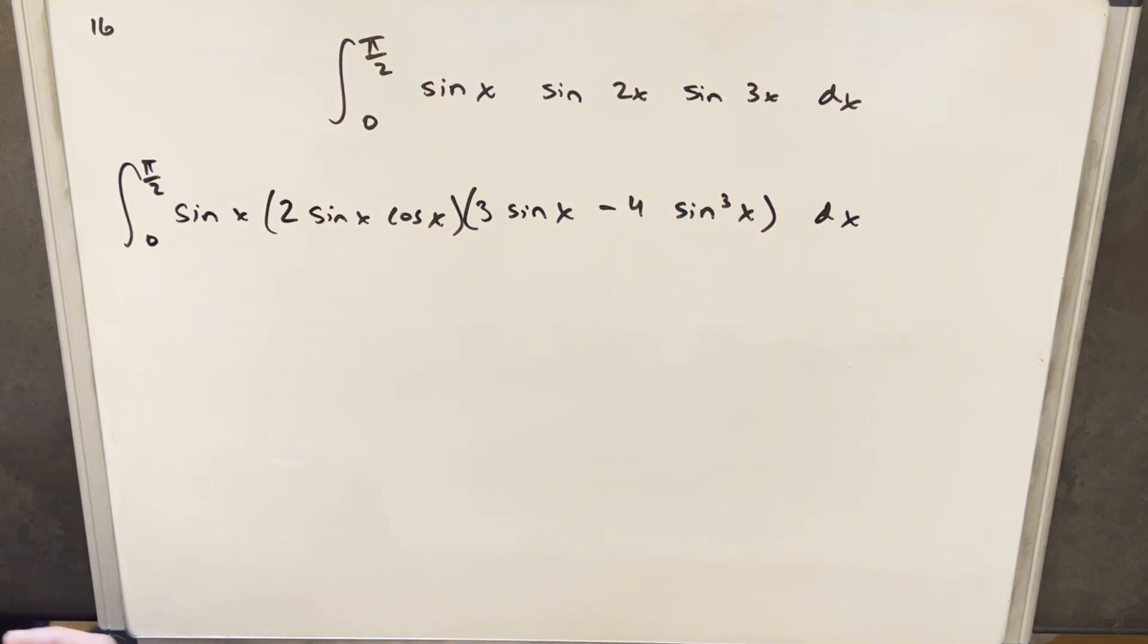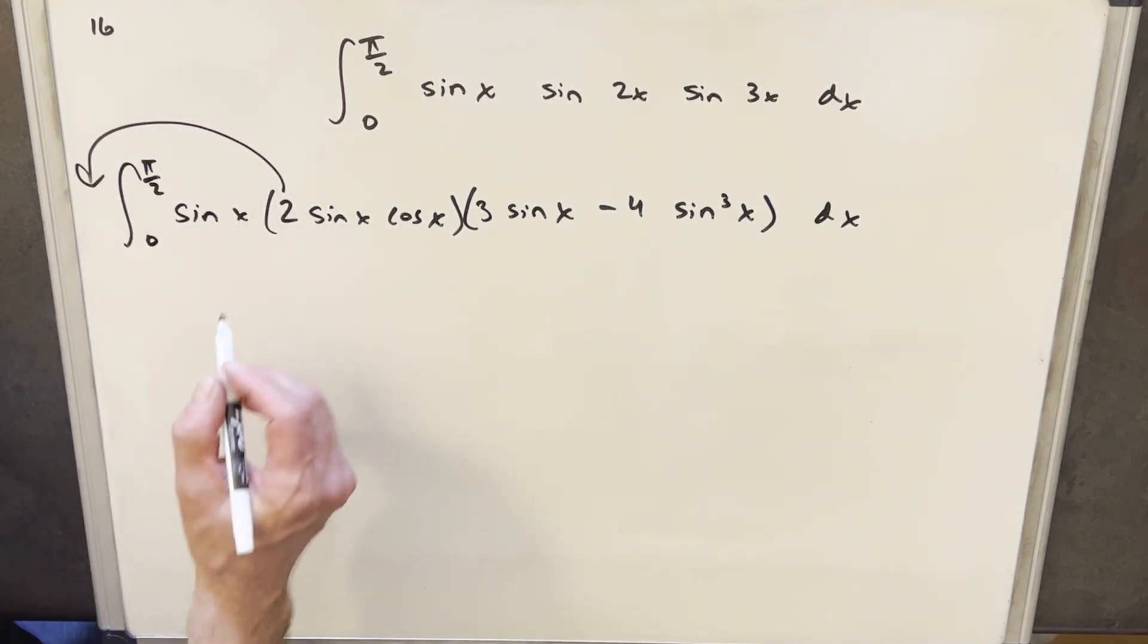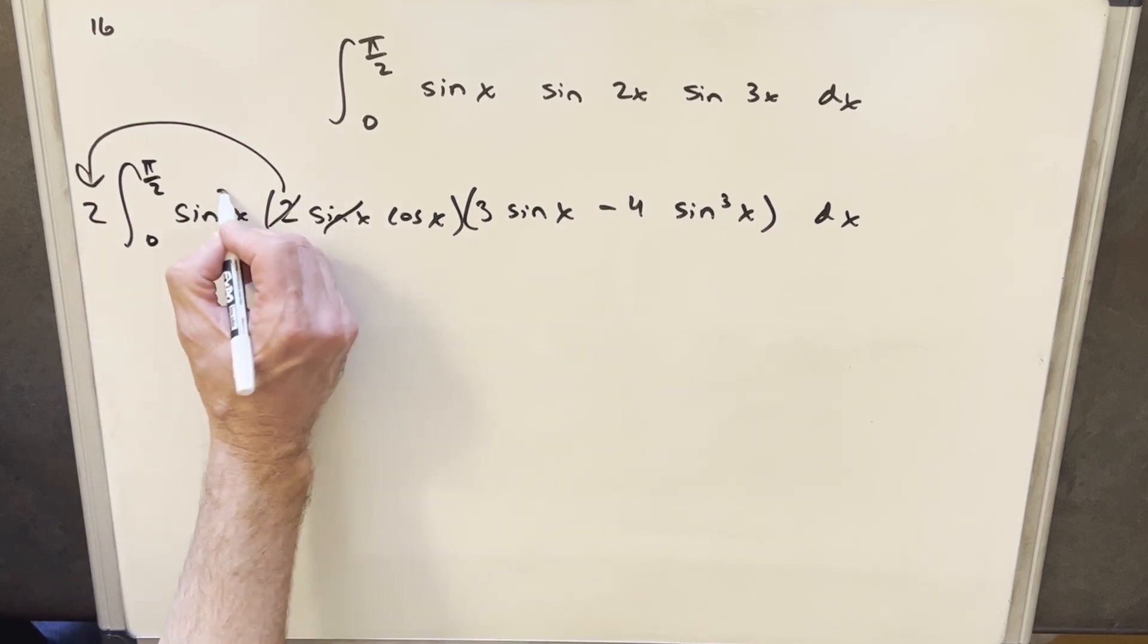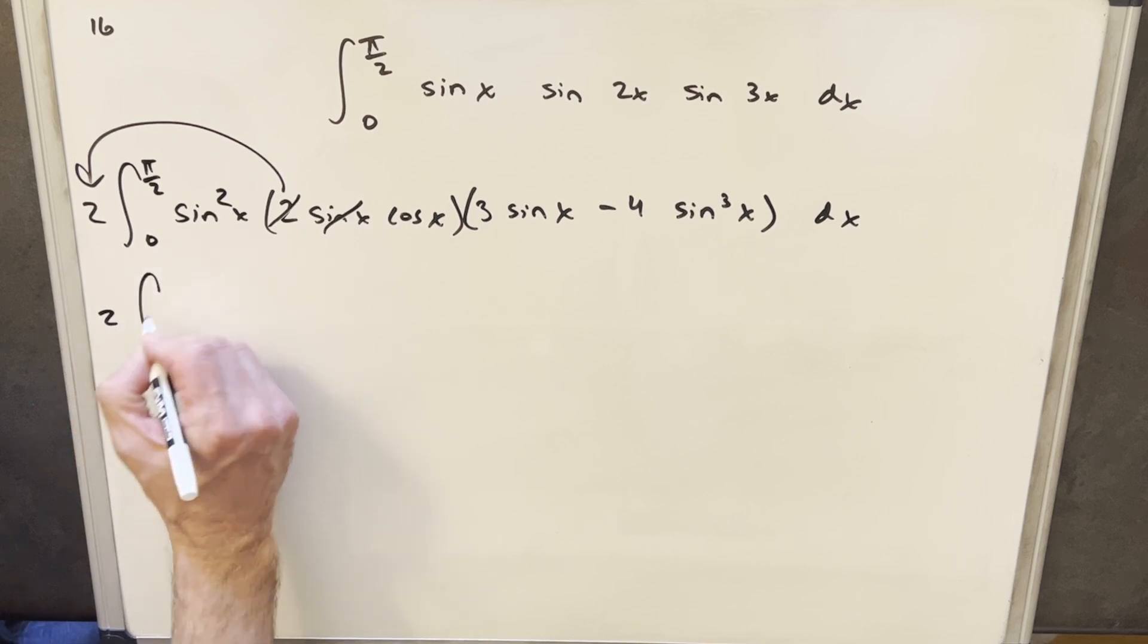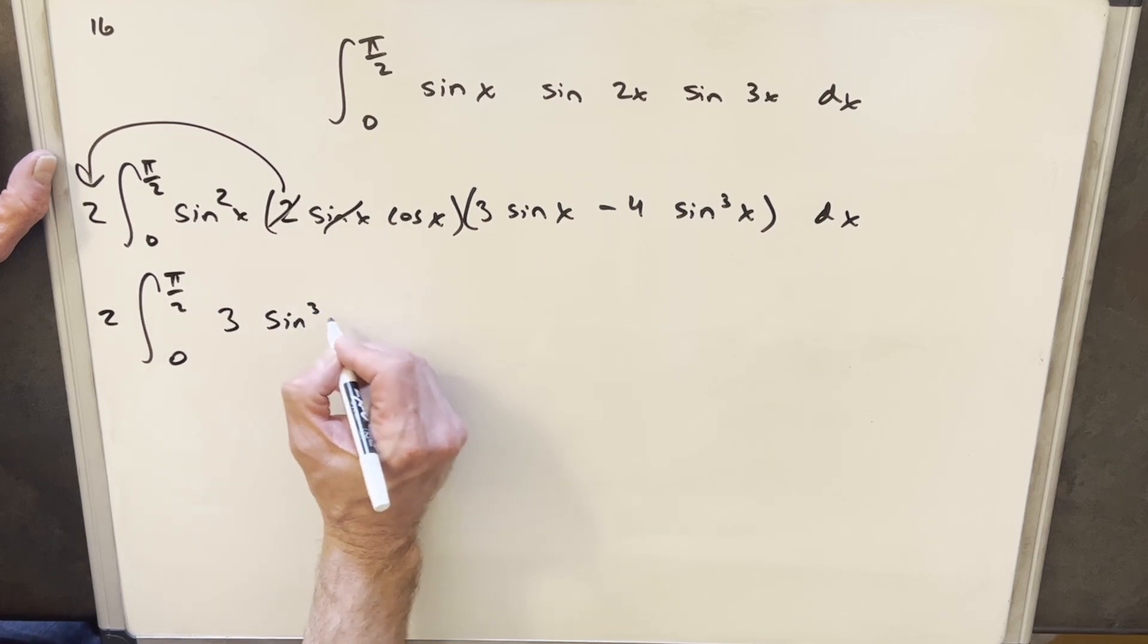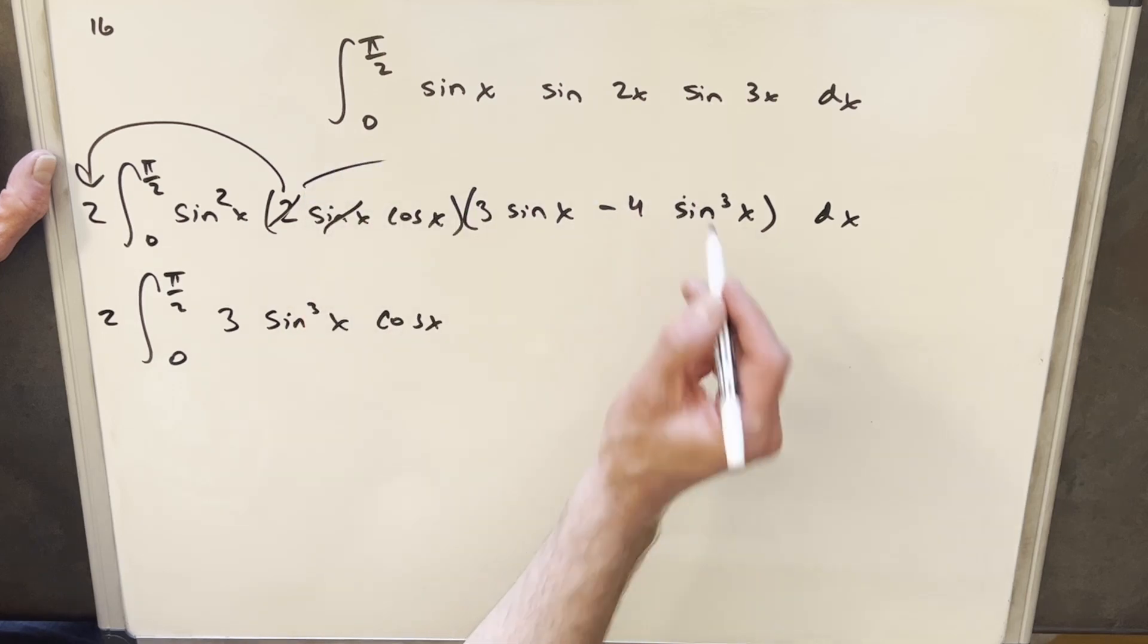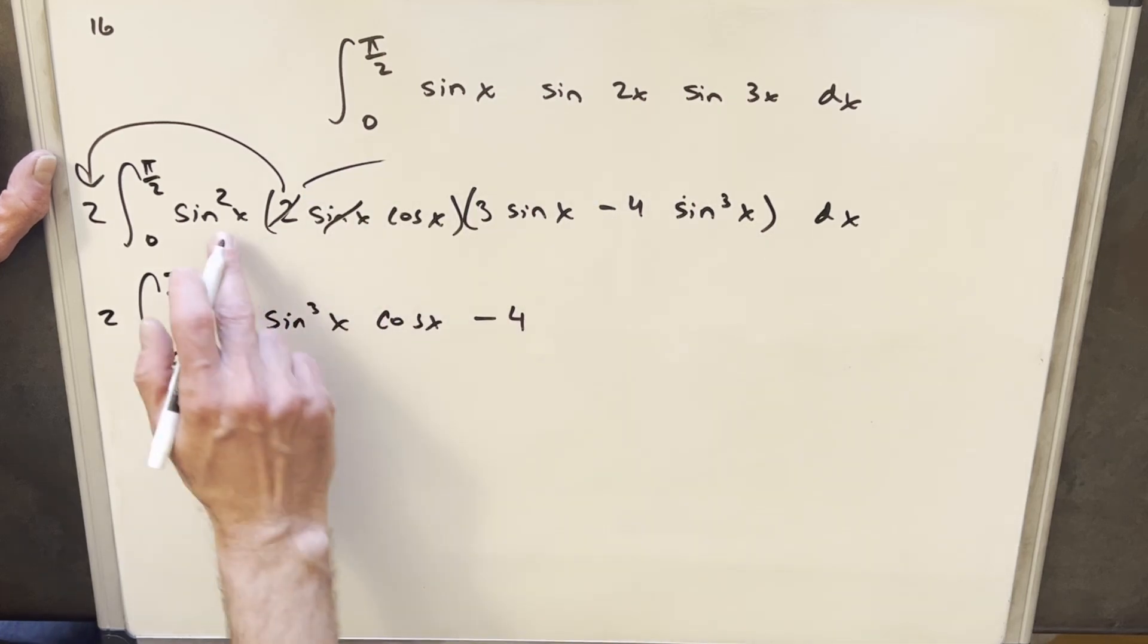And then we're going to do some simplification. I'll bring this 2 out front, and this will be a sine squared, and then I'm going to take this and just distribute it in. So here we'll take sine squared cos x and 1 times 3 sine x, and we're going to have 3 sine cubed x cos x, and then distributing to this term, we're going to have minus 4 sine cubed times sine squared.